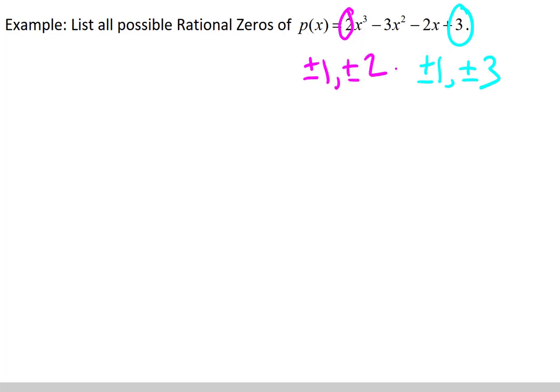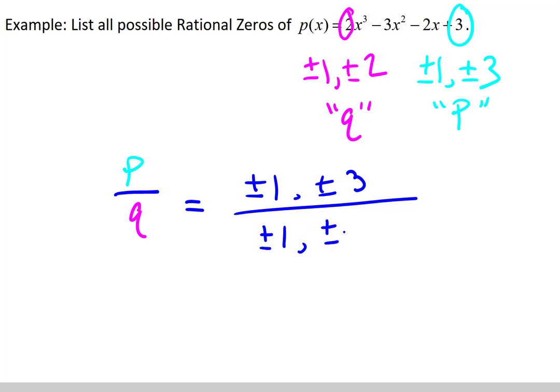In looking at the way the theorem is defined, let's recall that the values we have in turquoise here that are the factors of the constant term at the end, those are the p's, and then the factors of the leading term are the q's, and the theorem said that all of our possible rational zeros can be listed or described as p over q. So practically, we'll put the lists together. That means for p we have plus or minus 1 and plus or minus 3. For q we have plus or minus 1 and plus or minus 2.